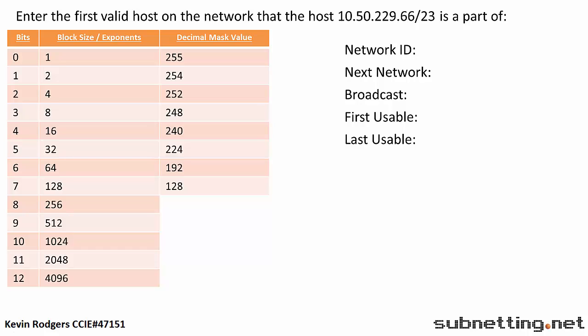The first thing we have to do is find our block size. Since the mask is larger than a /16 and less than a /24, we know we are working in the third octet. Since there are only 8 bits in an octet, or 0 through 7, this means the 8th bit on the cheat sheet represents the previous octet, which is all binary ones, or a /16. From there we have to count up until we reach the given mask, which is a /23.